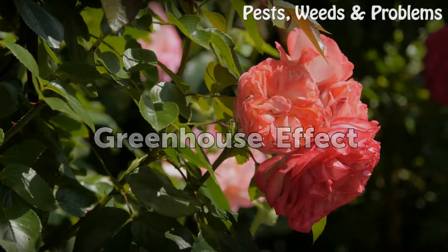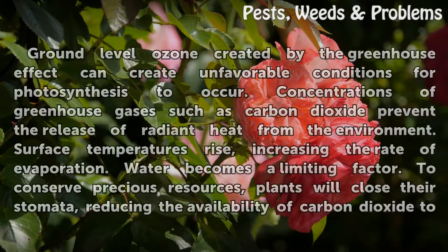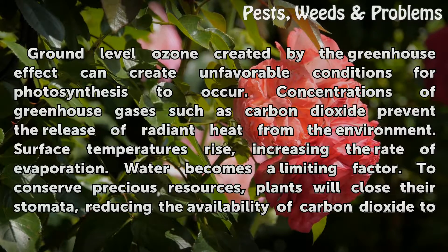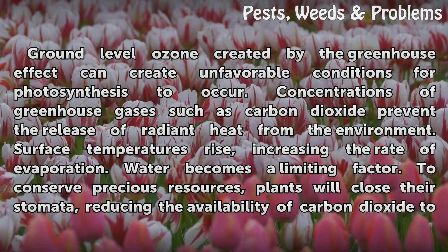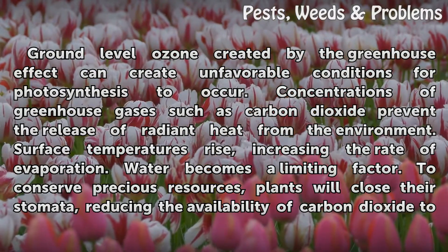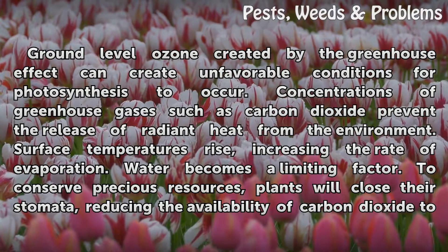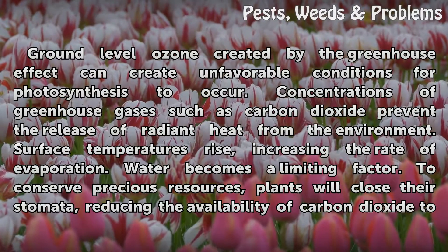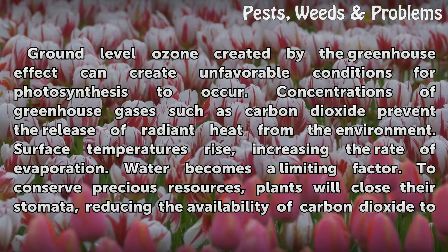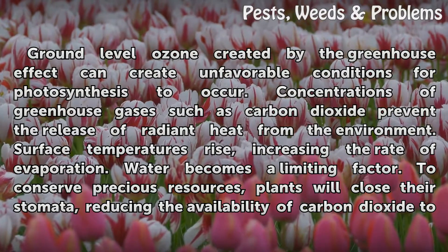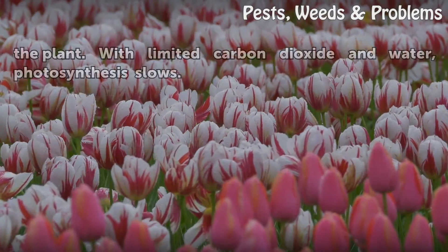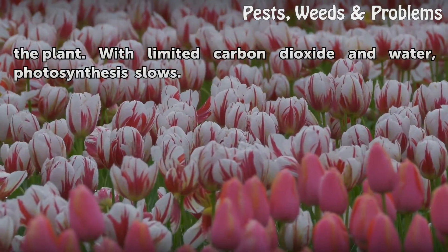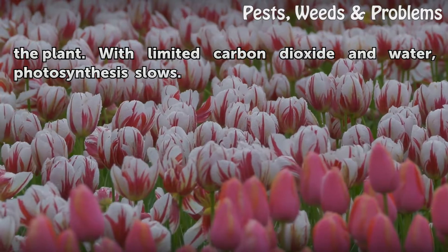Greenhouse Effect: Ground-level ozone created by the greenhouse effect can create unfavorable conditions for photosynthesis to occur. Concentrations of greenhouse gases such as carbon dioxide prevent the release of radiant heat from the environment. Surface temperatures rise, increasing the rate of evaporation. Water becomes a limiting factor. To conserve precious resources, plants will close their stomata, reducing the availability of carbon dioxide to the plant. With limited carbon dioxide and water, photosynthesis slows.